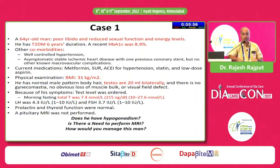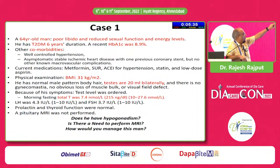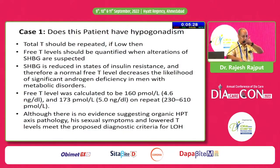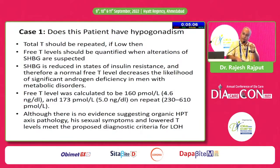Coming back to case one: I've highlighted the important points. This is a 64-year-old patient with poor libido, obesity, and diabetes. In this patient, testosterone should be repeated, and because he is elderly, diabetic, and obese, these conditions will alter SHBG levels. A low total testosterone makes the case for ordering SHBG or measuring free testosterone. Only if free testosterone is also found to be low can we consider testosterone therapy.